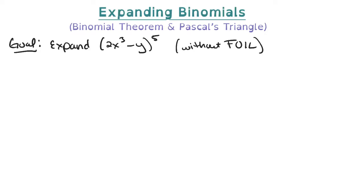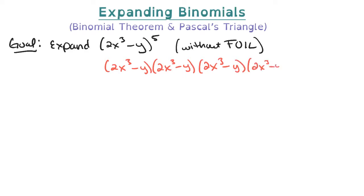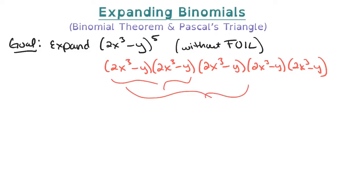Foiling would be a totally legitimate way to do that problem, but it would mean taking 2x cubed minus y and multiplying it by itself five times. We'd have to foil two at a time, get that result, multiply by the next one, and combine all our like terms — a lengthy process where you really have to be careful not to make small mistakes. So we'd like to avoid doing this.